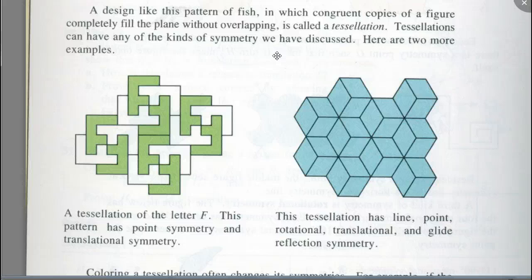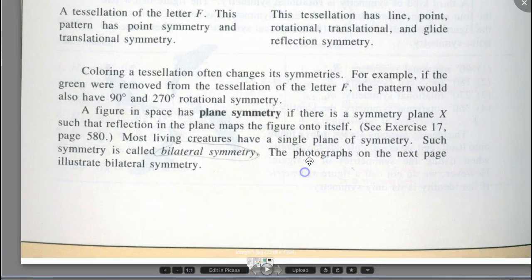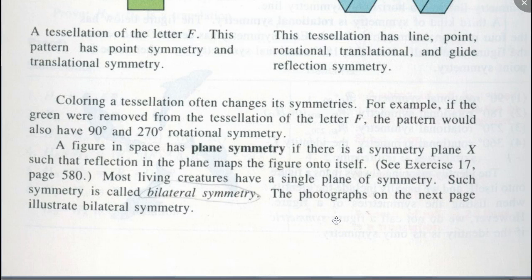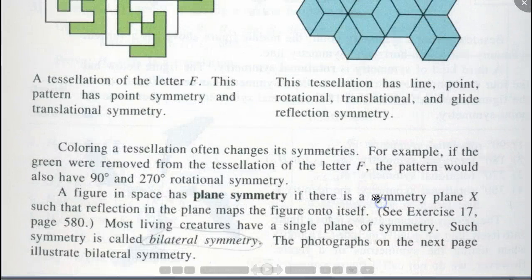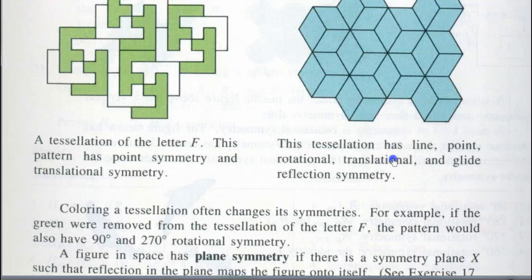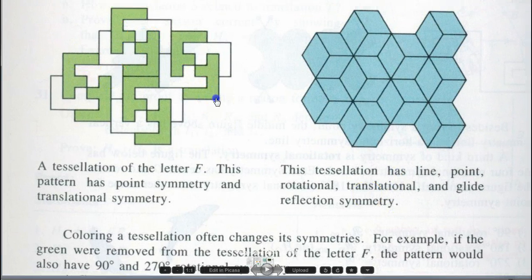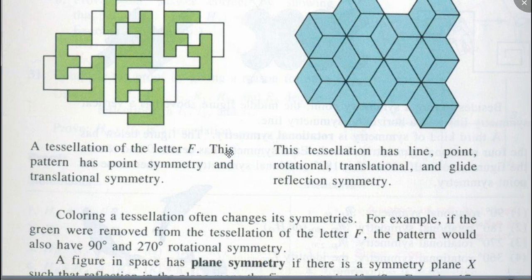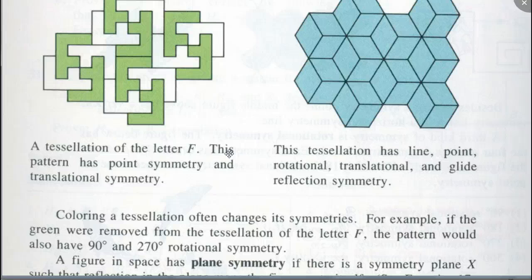Are you convinced it has all those? Coloring in a tessellation often changes the symmetries. For example, if the green were removed from the tessellation of the letter F, the pattern would also have 90-degree and 270-degree rotational symmetry. If we get rid of the green color, it will have rotational symmetry of 90 and 270. They don't mention 180-degree rotational symmetry separately because the pattern already has point symmetry, and 180-degree rotation is the same as point symmetry. They could also have said it has 360-degree rotation, which is the identity mapping.